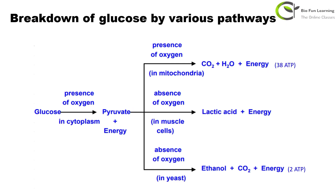In all these pathways, glucose first converts to pyruvate with some ATP molecules formed — this happens in the cytoplasm. In the mitochondria, in the presence of oxygen, pyruvate produces carbon dioxide, water, and energy in the form of ATP — 38 molecules of ATP are formed from one glucose molecule in aerobic respiration, producing a very large amount of energy. In absence of oxygen in muscle cells, pyruvate produces lactic acid and energy; in yeast cells, pyruvate produces ethanol, carbon dioxide, and energy — only 2 ATP molecules are formed, which is very little energy compared to aerobic respiration.